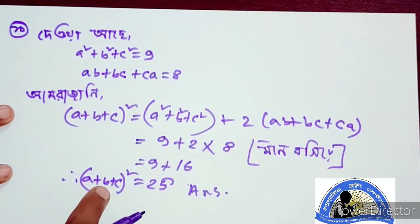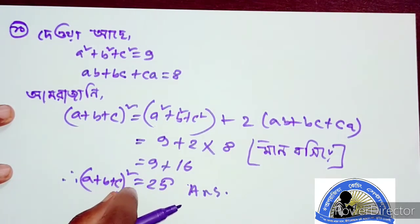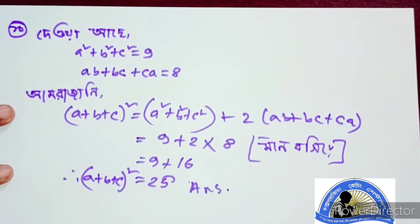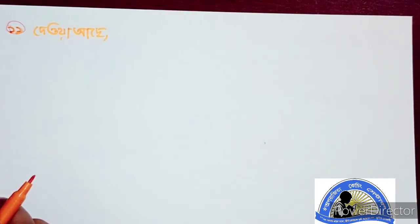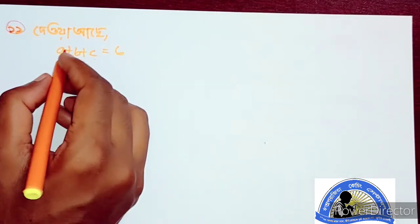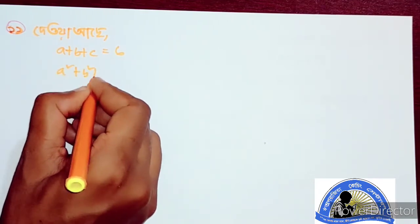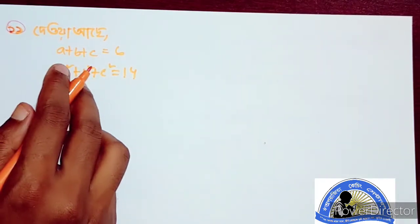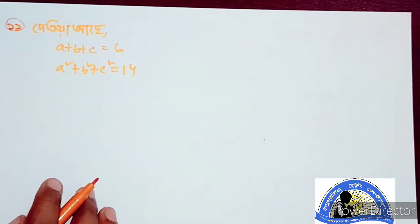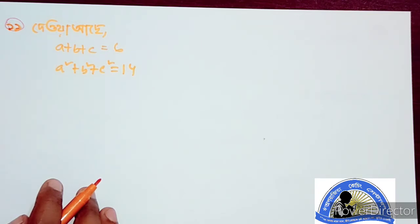If we put a plus c equal to 25, then a plus b plus c equals 6 or a plus b plus c equals 4, and a minus b plus b minus c equals 4. The next thing is we'll find the same thing. We need to evaluate: a minus b whole squared plus b minus c whole squared plus c minus a whole squared.